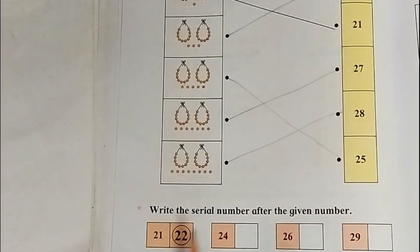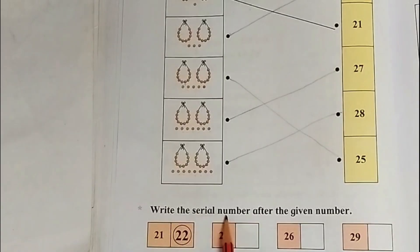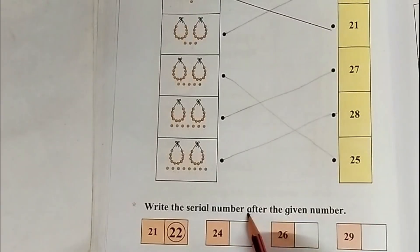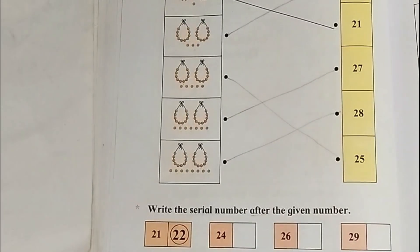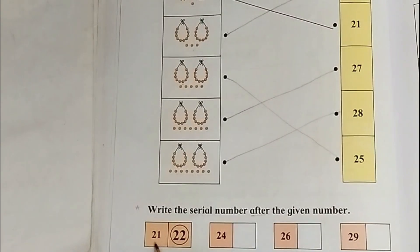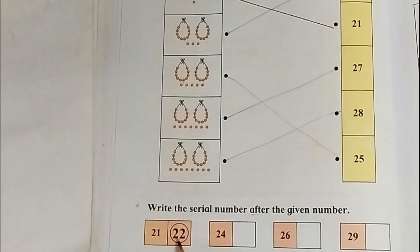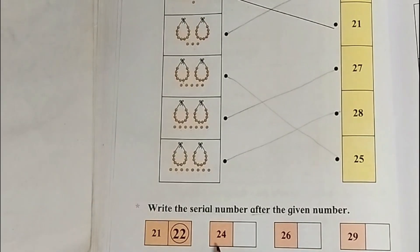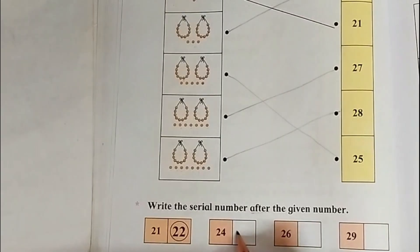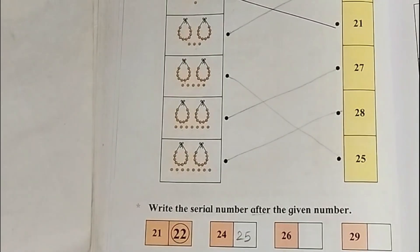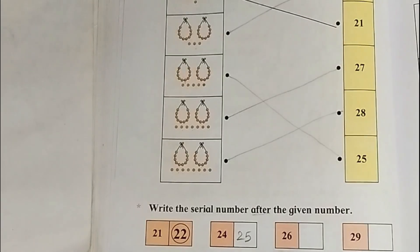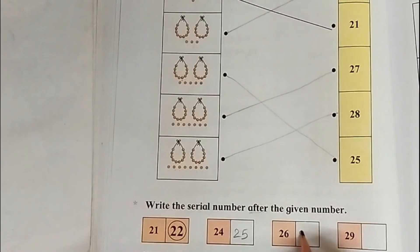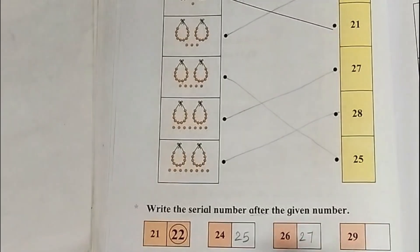Next question: write the serial number after the given number. 'After' means the number that comes just after. After 21 comes 22. Next is 24 — which number comes after 24? 25. Next is 26 — which number comes after 26? 27.